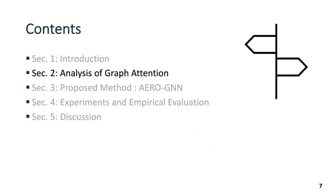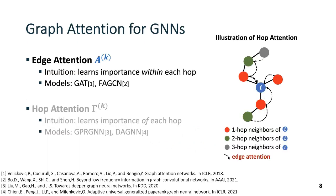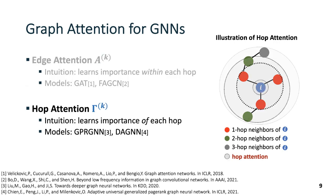This leads us to section 2 of analysis of graph attention. There are two variants of graph attention. The first is edge attention. It learns neighbor importance within each hop. From the figure, we see that propagation weights for direct neighbors are all different. Another variant is hop attention, which learns the importance of each hop. From the visualization, we see that propagation weights are different for each hop.